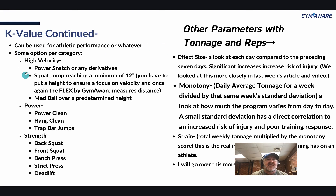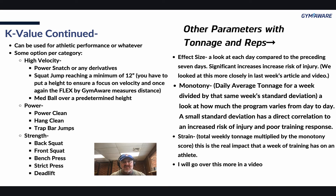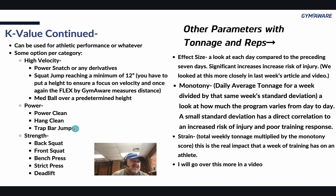The k value can also be used for athletic performance. For category selection, choose one from a few groups: high velocity options include power snatch derivatives or squat jumps reaching a minimum of 12 inches — you must set a height to ensure focus on velocity. The Flex measures distance, or you can use a med ball over a predetermined height. For power: power clean, hang clean, trap bar jumps. For strength: back squat, front squat, bench press, strict press.